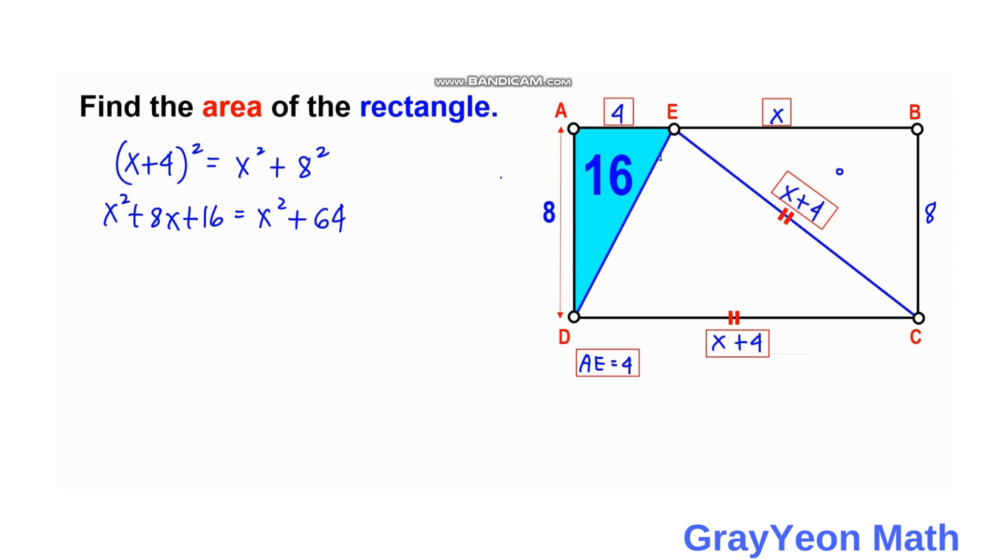We can cancel X squared on both sides, and we have 8X equals 64 minus 16. Simplifying the right-hand side, 64 minus 16 gives us 48, so 8X equals 48.